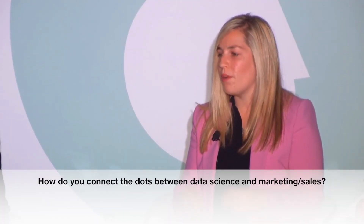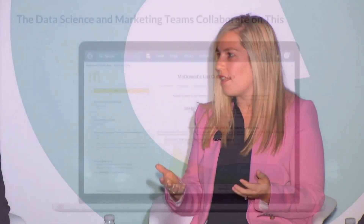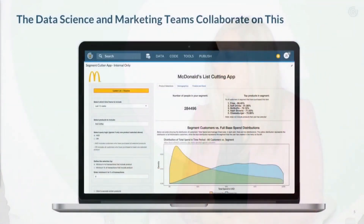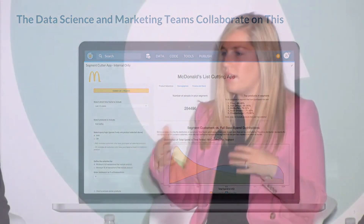When you think about people that might not be able to write out a SQL code and pull a list of first-party customers to activate against, that also presents a challenge. So one thing that we've worked with you guys to do is build a list-cutter tool — a way for somebody like me or our agency partners to go in and easily pull out the segment that they want, so we can activate against that segment and apply business knowledge to the data without necessarily having to have all the technical background.